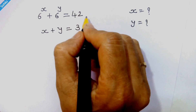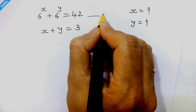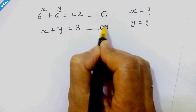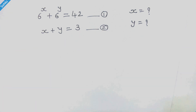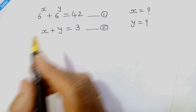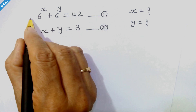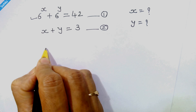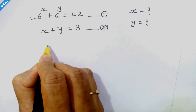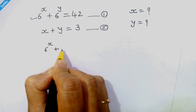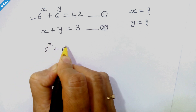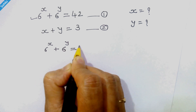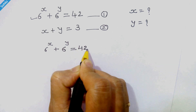We will call this equation number 1, and this is equation number 2. We will start with equation number 1, which is 6 raised to x plus 6 raised to y is equal to 42.